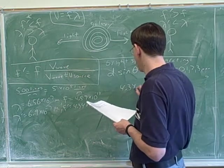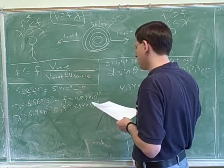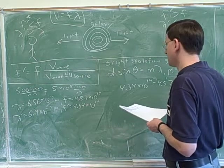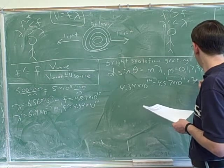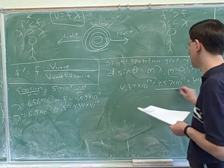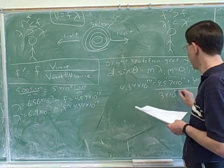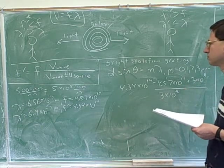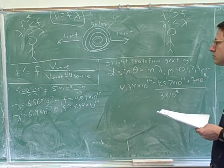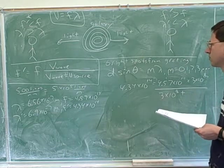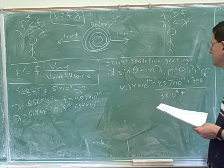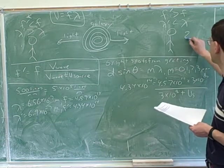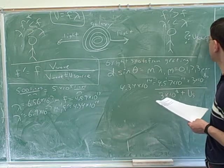4.35 times 10 to the 14th equals 4.57 times 10 to the 14th times 3 times 10 to the 8th over 3 times 10 to the 8th plus v-source, which is what we are figuring out. We should have really written that down a long time ago that we're trying to figure out v-source.